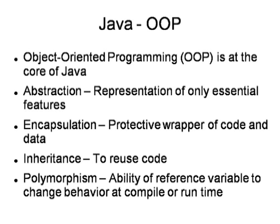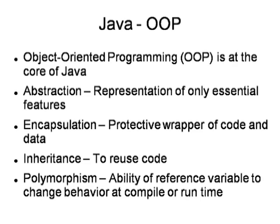The next OOP principle is polymorphism — actually the word polymorphism is a biological word. Polymorphism means one operator can behave in many forms — that is the basic meaning. In programming, it is the ability of any reference variable to change its behavior according to conditions. The conditions will come when that variable will execute at runtime. Depending on the conditions, the reference variable will change its behavior and perform certain actions. These are the four basic principles of Java OOP.